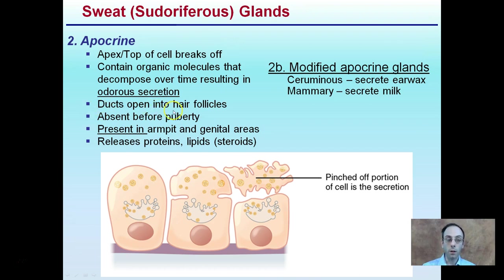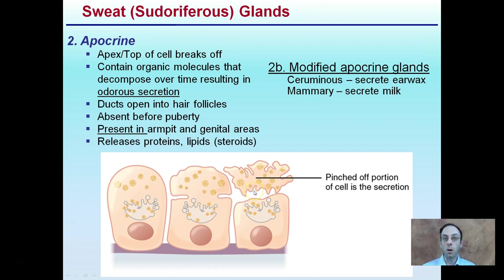Apocrine ducts open into the hair follicles, and these glands are absent before puberty — they only develop after puberty. They're present in the armpit and genitalia areas and release proteins and lipids in the form of steroids. Because proteins and lipids — actual portions of the cell — are being released, this is what produces the odor, rather than just water with a little salt.